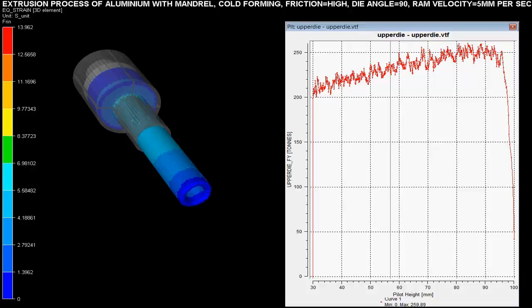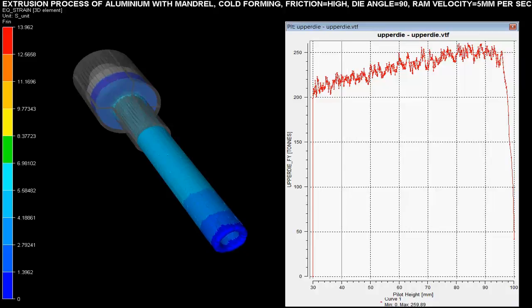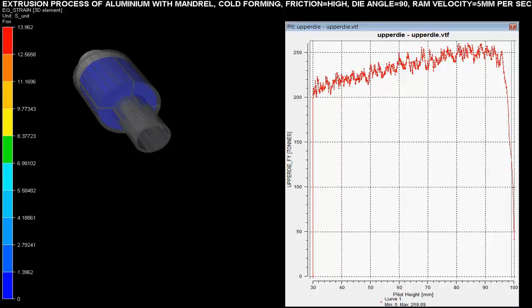Extrusion forces with respect to pilot height are shown on the graph. These forces are maximum when there is a sudden change in the cross-section area of the billet. As the pilot height reduces, the force required for pipe extrusion increases.